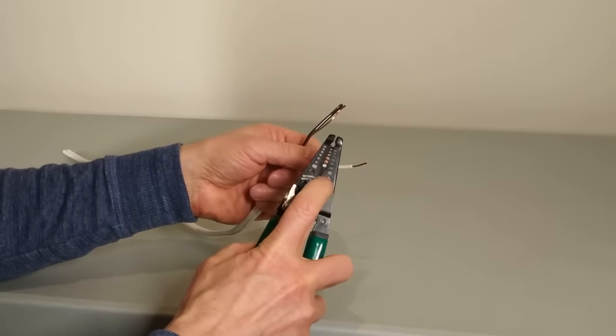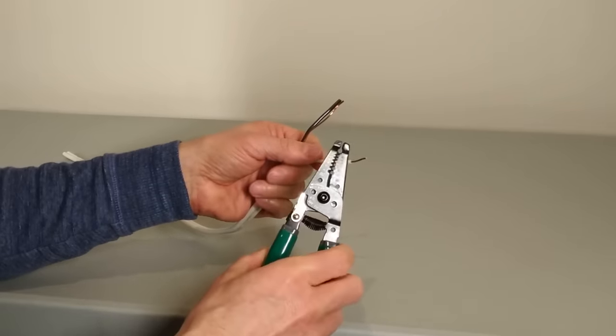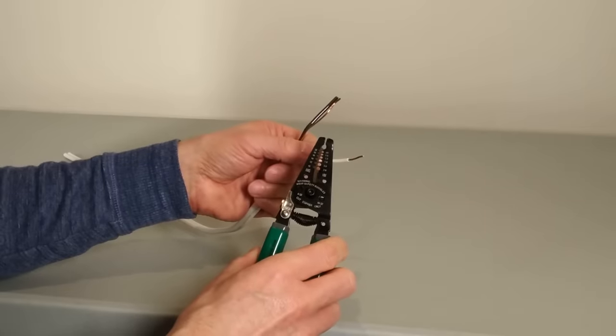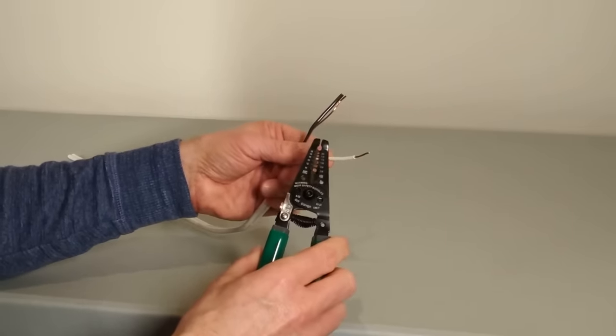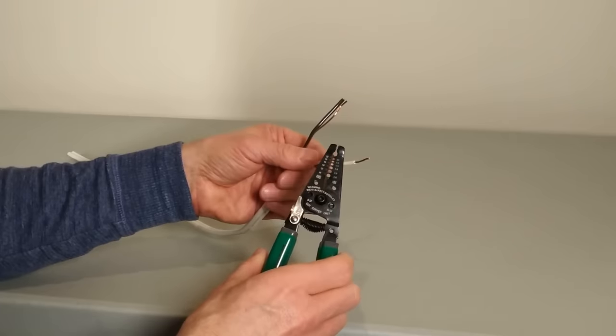Mistake number four is not using the J-hook holes that are on the wire stripper. Many DIYers don't use these holes because they're not sure what they're for. What they're actually for is to allow you to create a J-hook quickly and easily. You don't have to reach for needle nose pliers to create those J-hooks.